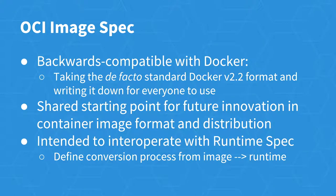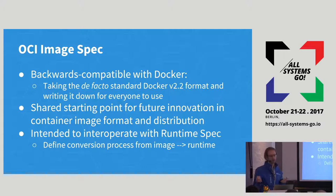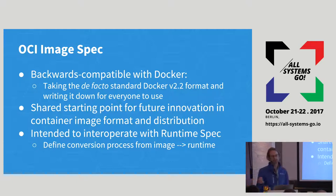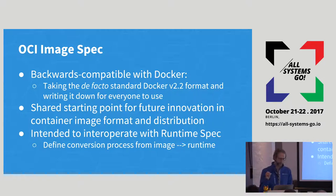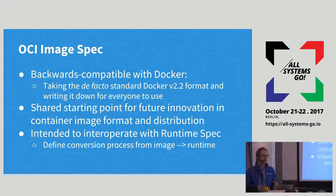The key thing to note about the image spec is that it was designed to be backwards compatible with Docker. We wanted to be able to use all of the root file systems — the Docker images already out there — and have anyone who already has a registry be able to use those seamlessly within OCI implementations. This image format wasn't well specified before; this is really just about taking that de facto standard, writing it down and clarifying it, so other people can build against it in a predictable way.